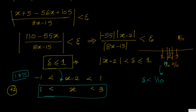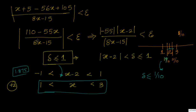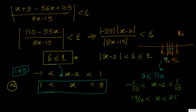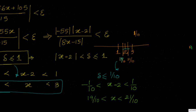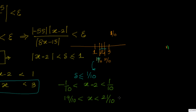Now we have taken delta ≤ 1/10. This gives us -1/10 < x - 2 < 1/10. That means if we add 2, we have 19/10 < x < 21/10. The x values will be between 19/10 and 21/10.